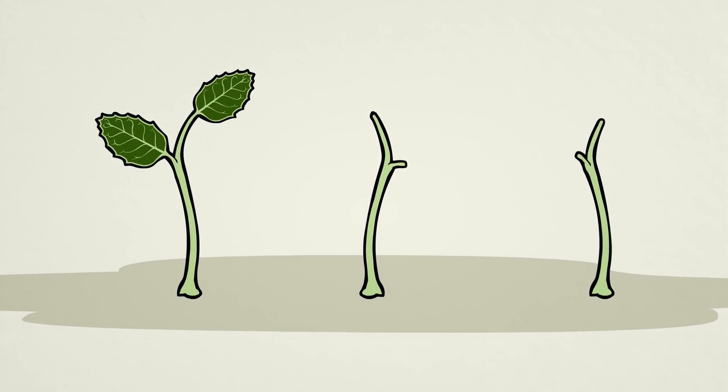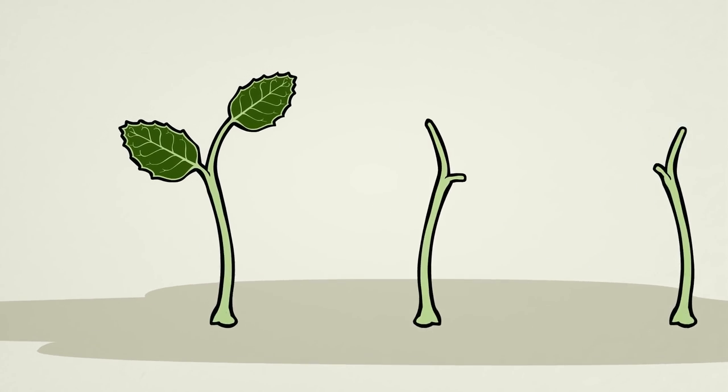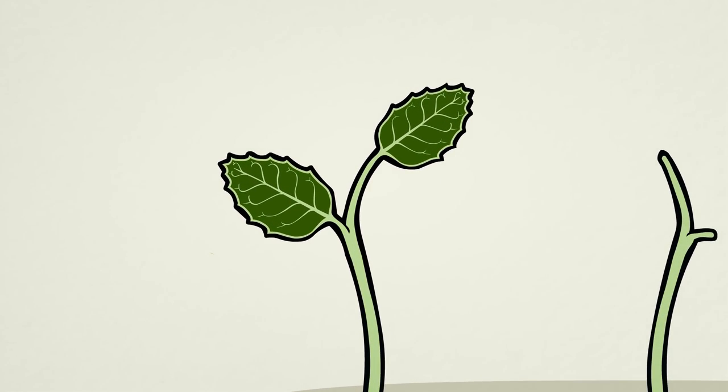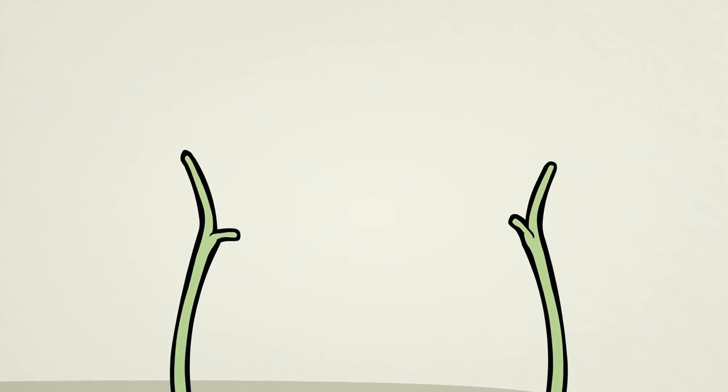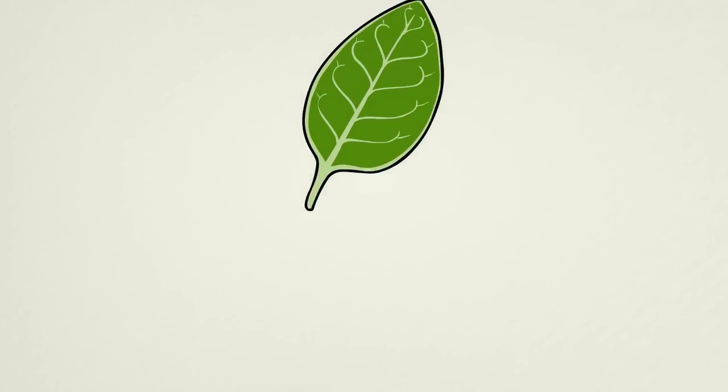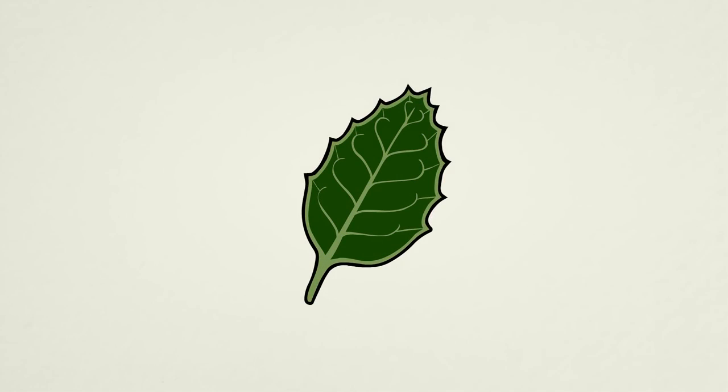Nature, simply by being difficult to survive in, selects who gets to reproduce and pass on their new traits and who does not. In this case, mutations which simply caused the veins of these leaves to extend past their edges gave rise to a brand new weapon.